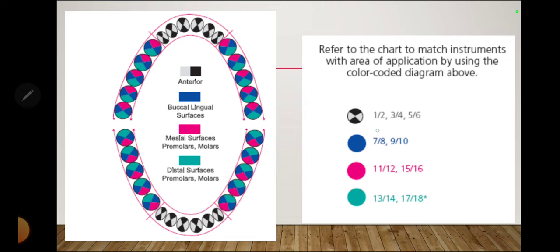Gracey curets 1, 2, 3, 4, 5, and 6 are used on anteriors — both upper and lower anteriors. As you can see in the diagram, numbers 1 through 6 cover the anterior teeth.